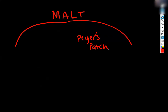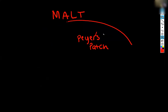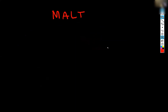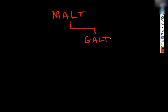Peyer's patch is a type of MALT. GALT is also a type of MALT — GALT stands for gut associated lymphatic tissue. So if I were to make a little hierarchy: MALT is any mucosa associated lymphatic tissue, and under that, one subheading is GALT, which is specific to the digestive system.